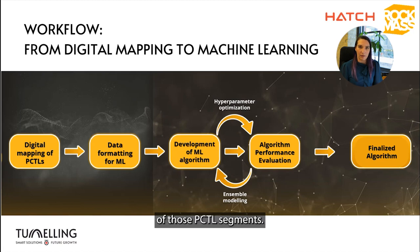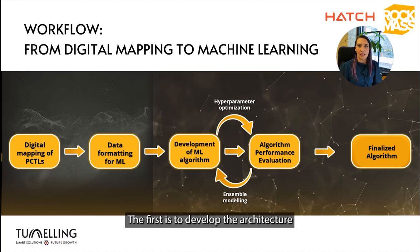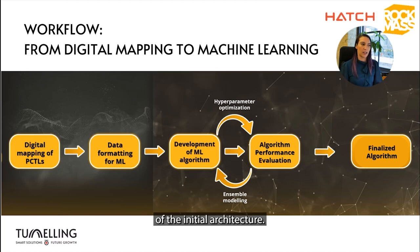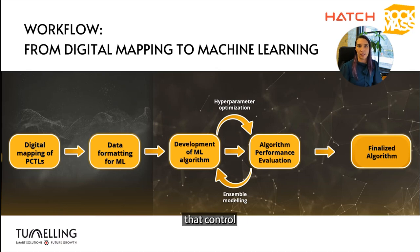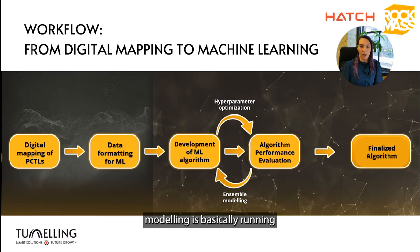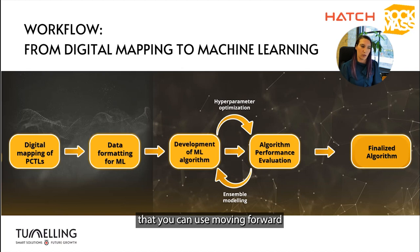Here is the workflow I'll be presenting. First is the digital mapping of the PCTL segments. Second is formatting that data for use in a machine learning algorithm. The next step is an iterative process, just like most engineering modeling activities: develop the architecture, then test its performance. After that you enter a cycle of hyperparameter optimization and ensemble modeling. Hyperparameter optimization tunes the parameters that control the learning of the algorithm, and ensemble modeling runs several models in parallel to quantify uncertainty of the outputs. Once complete, you have a finalized algorithm to make engineering decisions.